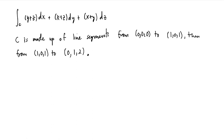In this example, we are asked to compute the partial path integral. Notice we have dx, dy, dz here — not just a ds arc length element — but the partial path integral. It's really a sum of partial path integrals, where the integrands are linear functions and the curve is made up of portions of two line segments.